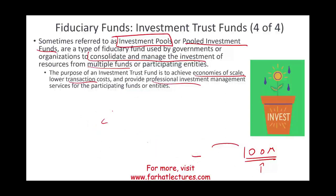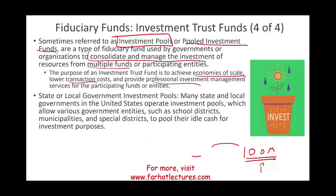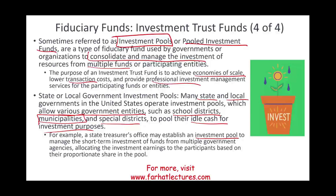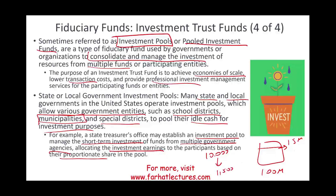Simply put, they pool their money to save money and receive better service. Many state and local governments in the U.S. operate investment pools, allowing various government entities — such as school districts, municipalities within the same city, and special districts — to pool their idle cash for investment purposes. For example, a state treasurer's office may establish an investment pool for short-term investments across multiple government agencies. Earnings are then allocated based on each participant's proportionate share — if your county contributed 15 million out of 100 million total, you receive 15% of the earnings.